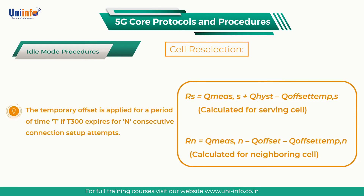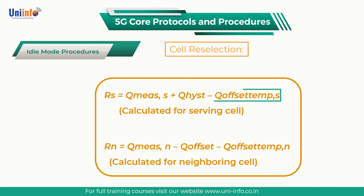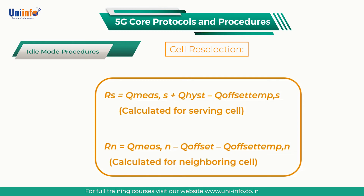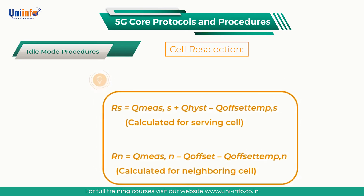The temporary offset is applied for a period of time T if T300 expires for N consecutive connection setup attempts, where T is equal to Connection Establishment Failure Offset Validity. The offset is also applied if the UE has previously had setup attempt failures on the neighbouring cell and the Connection Establishment Failure Offset Validity timer is still running.